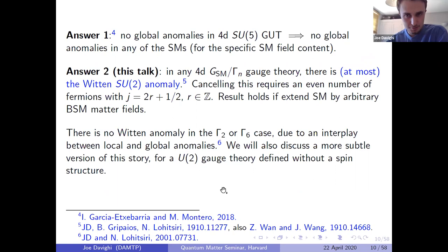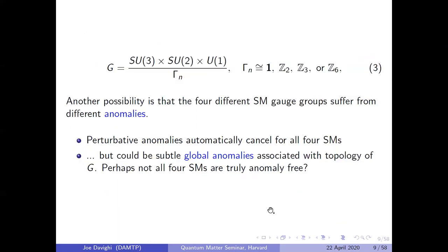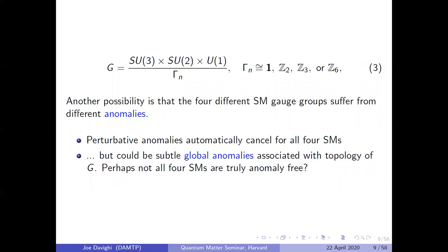Question: Is it possible to detect the difference between these gauge groups just by increasing the energy scale of a collider? For example, looking at just SU(2) and U(1), to distinguish SU(2) × U(1) from U(2): in the U(2) case, matter with charge one under U(1) necessarily has a fundamental representation under SU(2), whereas for SU(2) × U(1), you could have charge-one singlets under SU(2) and SU(2)-fundamental matter that is charge-neutral under U(1).